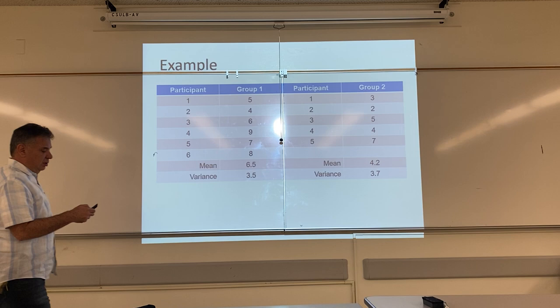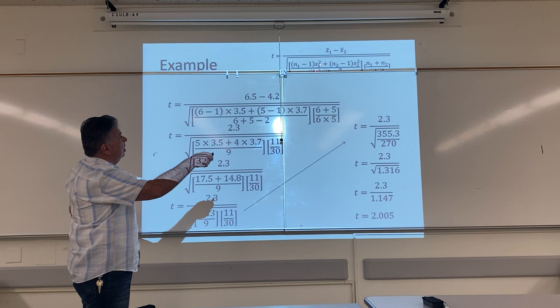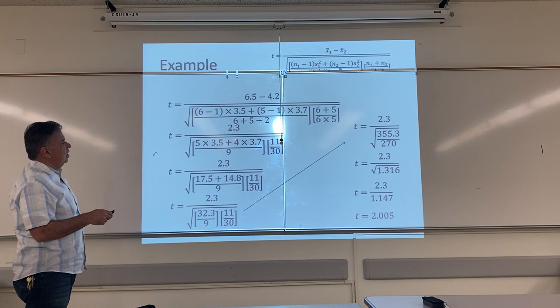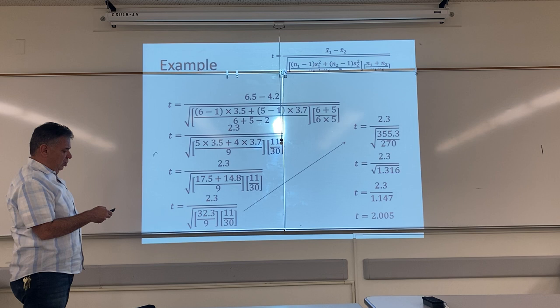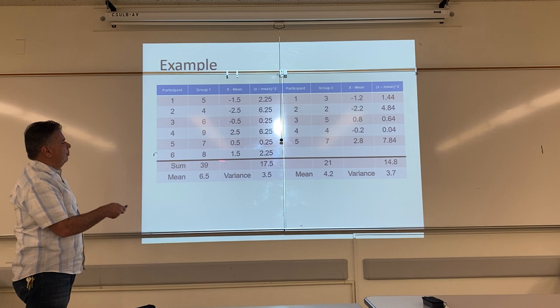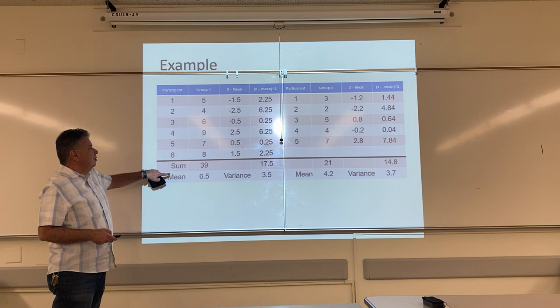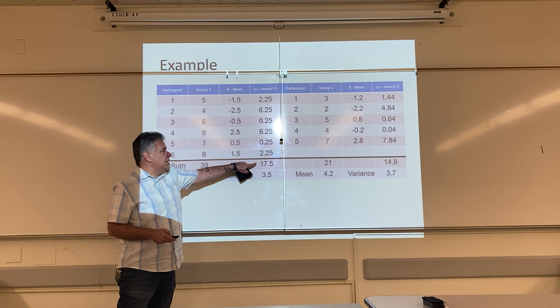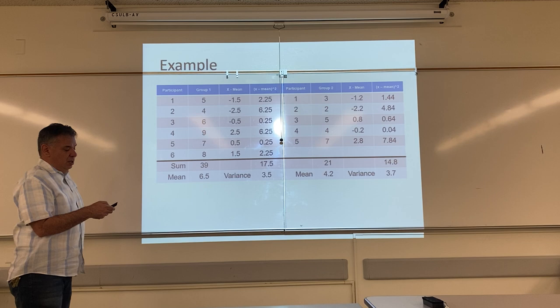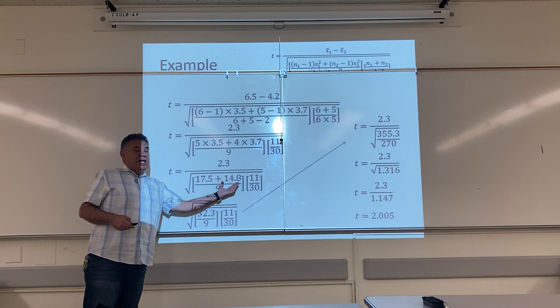So again, I found the mean and the variance for each group. I write my formula. Here's my formula. I plug the numbers correctly into the formula. I multiply first. 5 times 3.5 is 17.5. 4 times 3.7 is 14.8. Hey, wait a minute. These numbers look familiar. Right here and right here. Where did I see those? They're right here. Remember, when you multiply your degrees of freedom, 6 minus 1 times your variance, what do you get? You get the sum of the squares. So, 4 times the variance gives me the sum of the squares. That's why these numbers look familiar. That's why I was showing you that earlier in the formula.